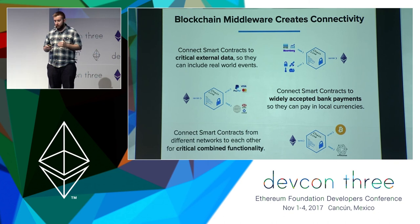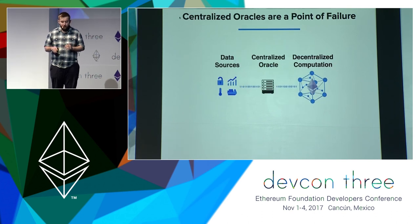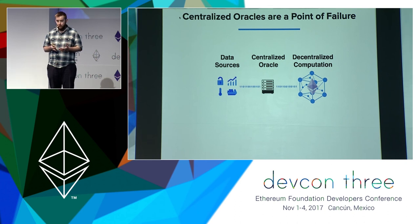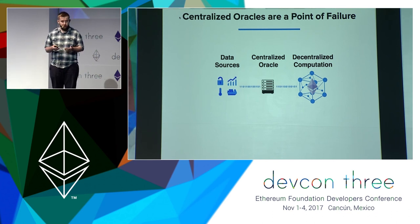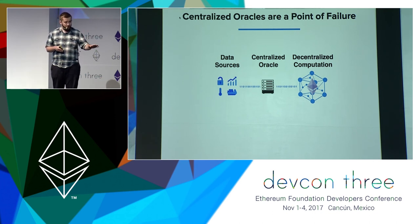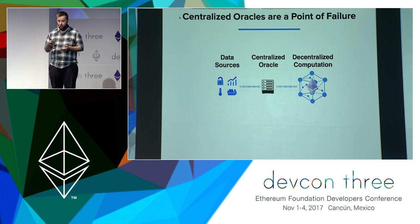To understand what our options are in this problem, it's good to look at some of the current approaches. One very common approach is basically the use of a centralized oracle — that is the approach where either an individual in the contract runs an oracle, one of the counterparties, or possibly a service. In any case, there's a single centralized oracle that acquires data as a trusted third party and gives that data to the decentralized computation network to process it.